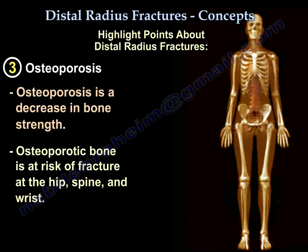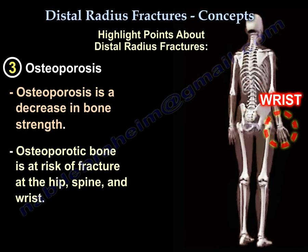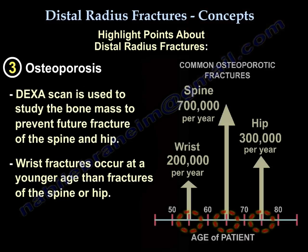Osteoporosis is an important topic. It is a decrease in bone strength. The osteoporotic bone is at risk of fracturing at the hip, spine, and wrist. A DEXA scan is used to study the bone mass in patients that have a wrist fracture, to prevent future fractures of the spine and hip. Wrist fractures occur at a younger age than fractures of the spine or hip, so you can detect osteopenia or osteoporosis early and treat it before they break the spine or hip.